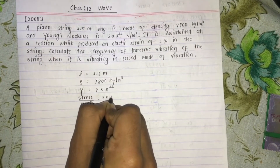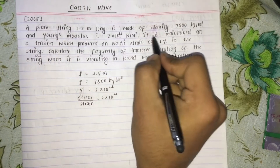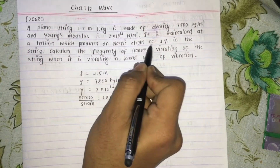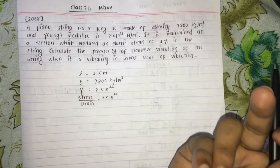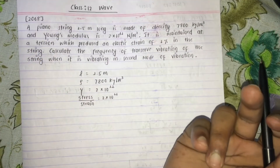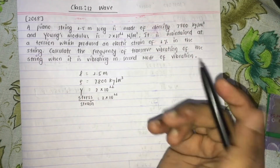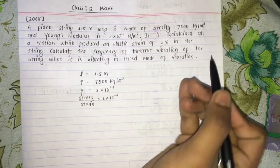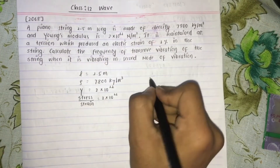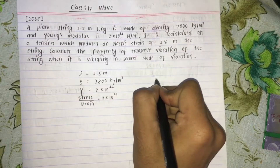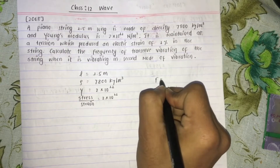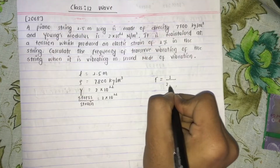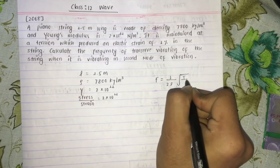The string is maintained under tension which produces an elastic strain of 1%. Calculate the frequency of the transverse wave of vibration. The formula for frequency is f equals 1 by 2L times root of tension by mu.